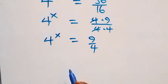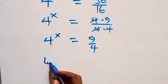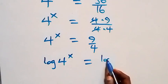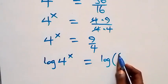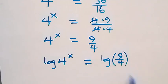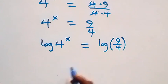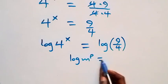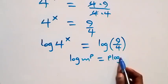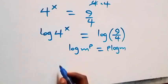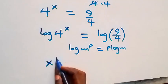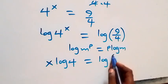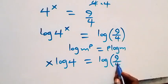The next step: we take the log on both sides. That is, we have log of 4 raised to power x equals log of 9 over 4. From the power law of logarithms, log of m raised to power p is the same as p times log m. What we have here becomes x log 4 equals log of 9 over 4.